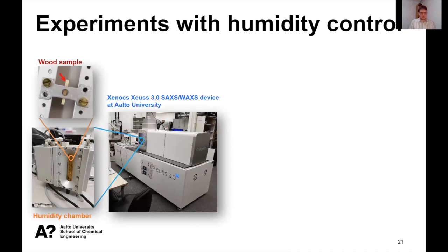To study moisture effects on the nanoscale structure of wood, we now have a great possibility at Aalto University. We received this Xenocs SAXS/WAXS device just this autumn, and the nice thing is that we have a humidity chamber which we can use to control the humidity and temperature of the sample — so we can take a wood sample, put it inside, and then measure the scattering as a function of humidity.